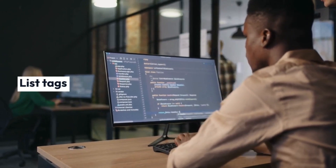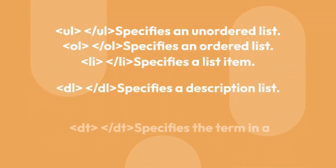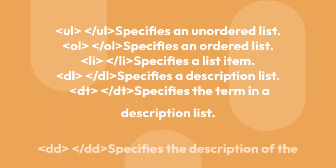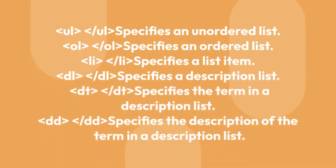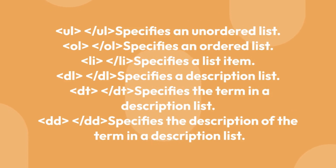List tags. The UL tag specifies an unordered list. The OL tag specifies an ordered list. The LI tag specifies a list item. The DL tag specifies a description list. The DT tag specifies the term in the description list. The DD tag specifies the description of the term in a description list.